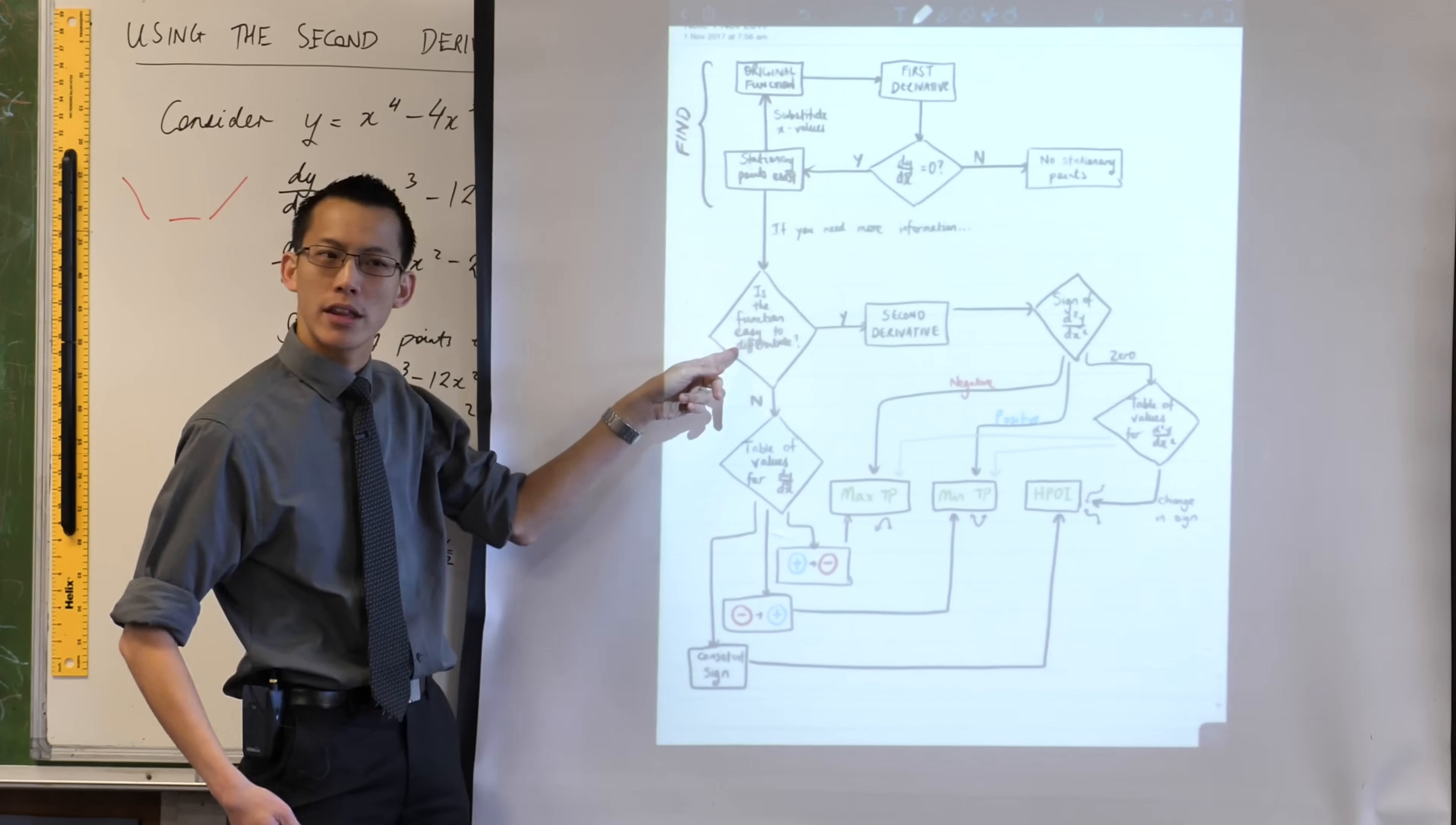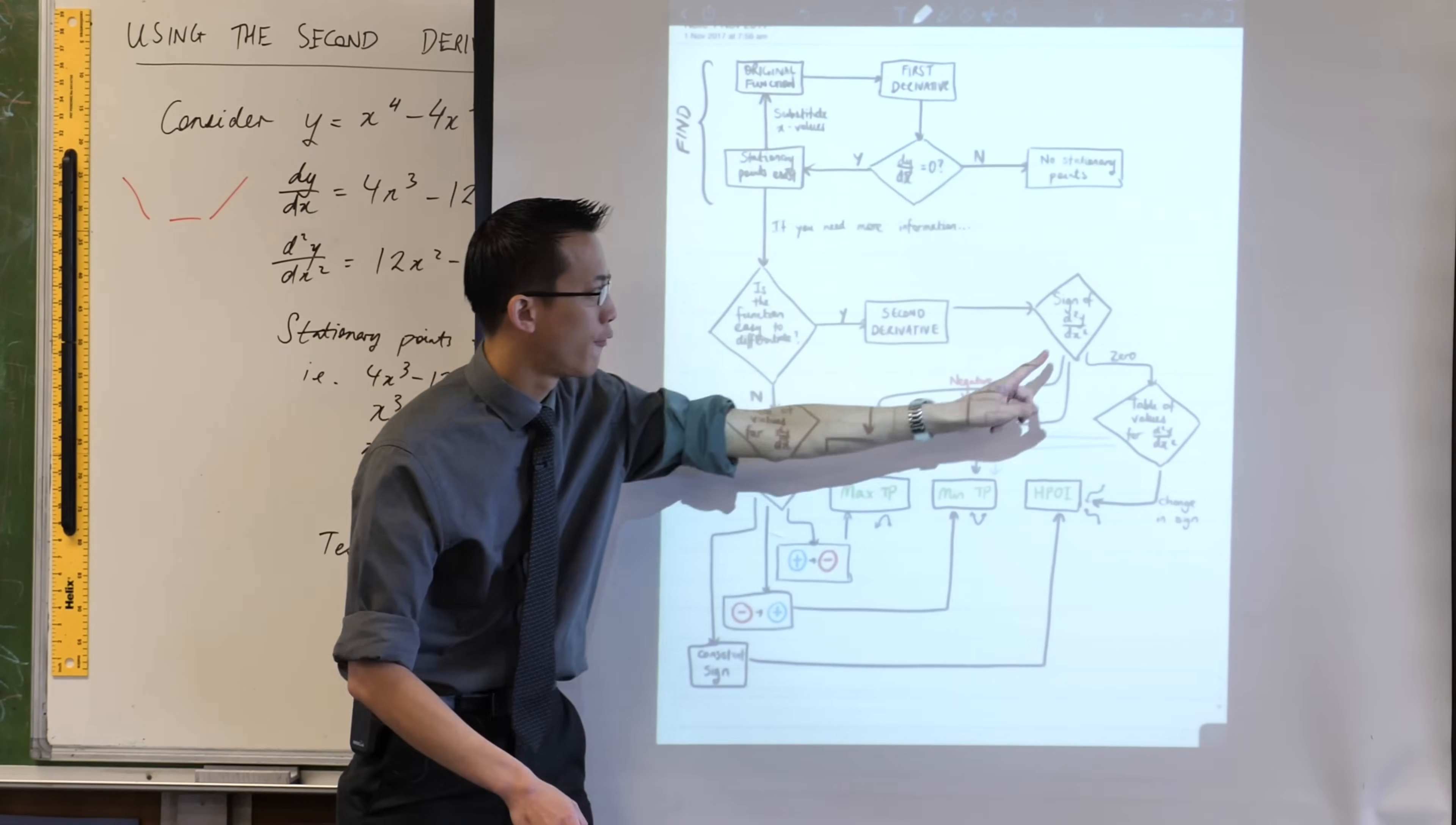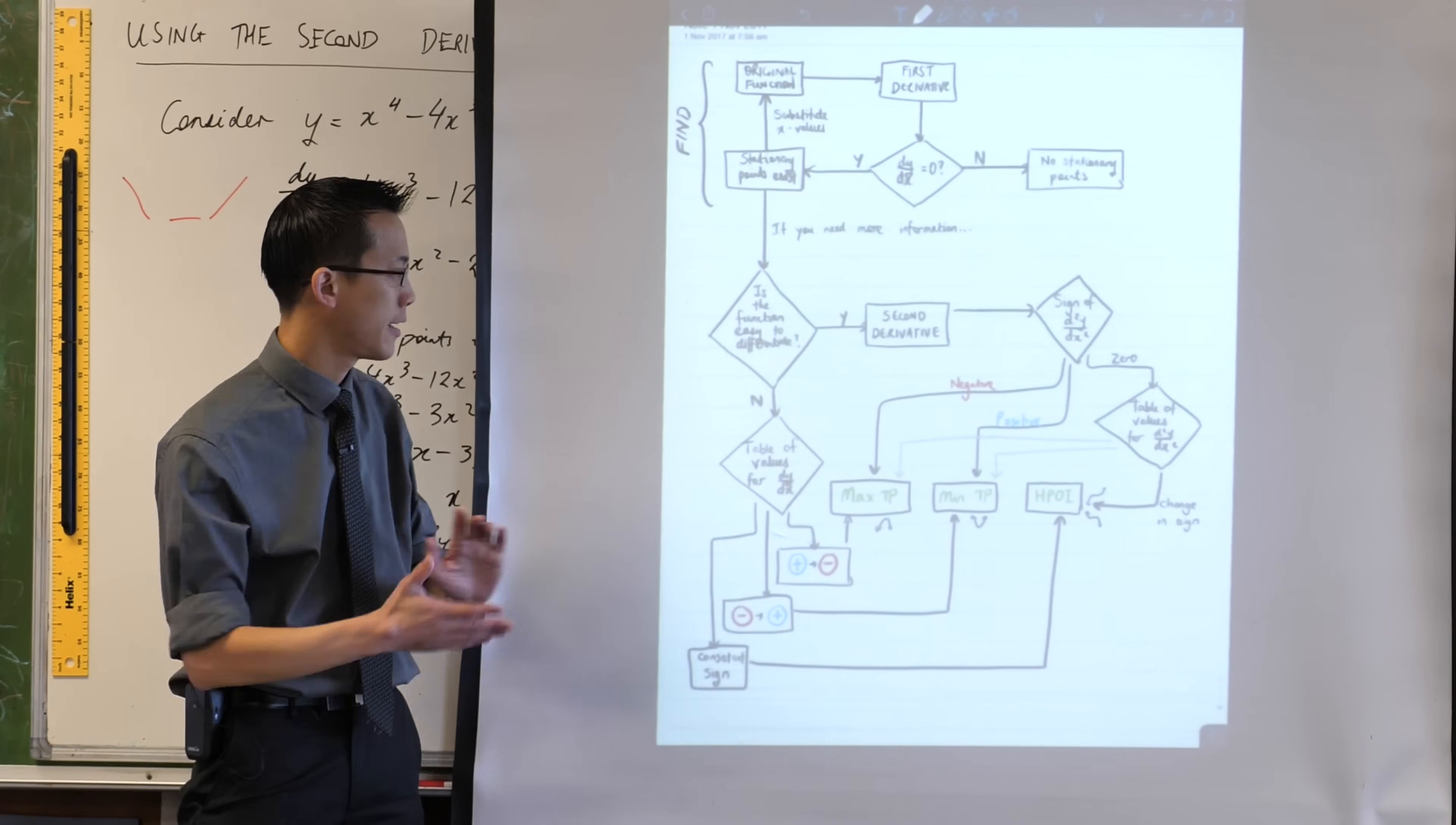Just remember the critical spots there. Think about whether your function's easy to differentiate - there's a key choice. Think about the values that you get out of that. There's a key point of interpretation on each of those.